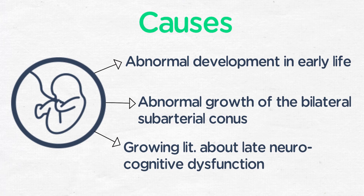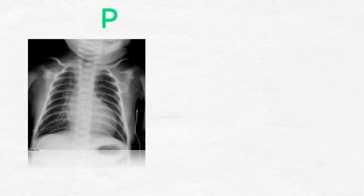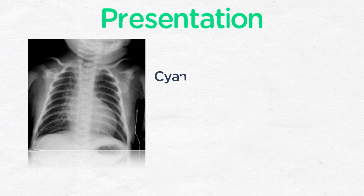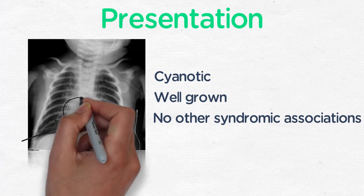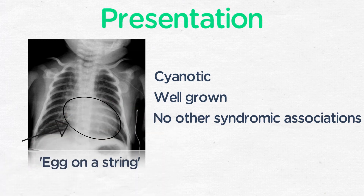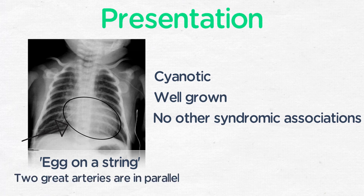At birth, infants with detransposition of the great arteries are generally quite cyanotic but do not have other signs of pulmonary disease. They tend to be well grown and without other syndromic associations. The chest x-ray is classically described as an "egg on a string," and refers to the fact that the two great arteries are in parallel, thus the mediastinum above the heart appears somewhat narrowed relative to a normal heart.